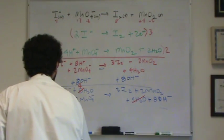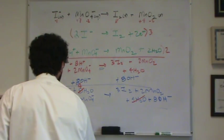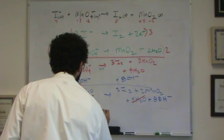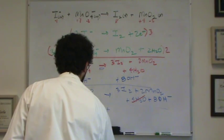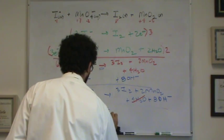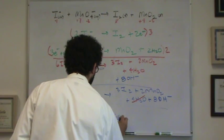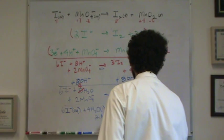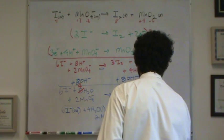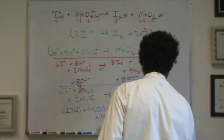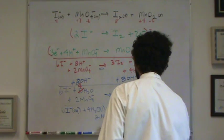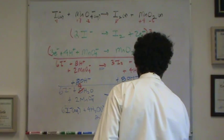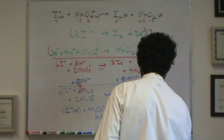We've got 6I- aqueous plus 4 waters liquid plus 2MnO4- permanganate aqueous. That all goes to 3I2 solid plus 2MnO2 solid plus 8OH- aqueous.